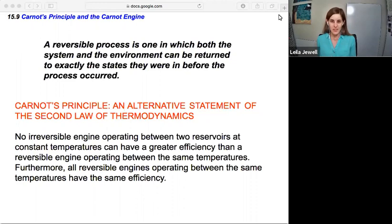Before we get into what that is, we first need to define what is a reversible process. A reversible process is one in which both the system and the environment around the system can be returned to exactly the states they were in before the process occurred.